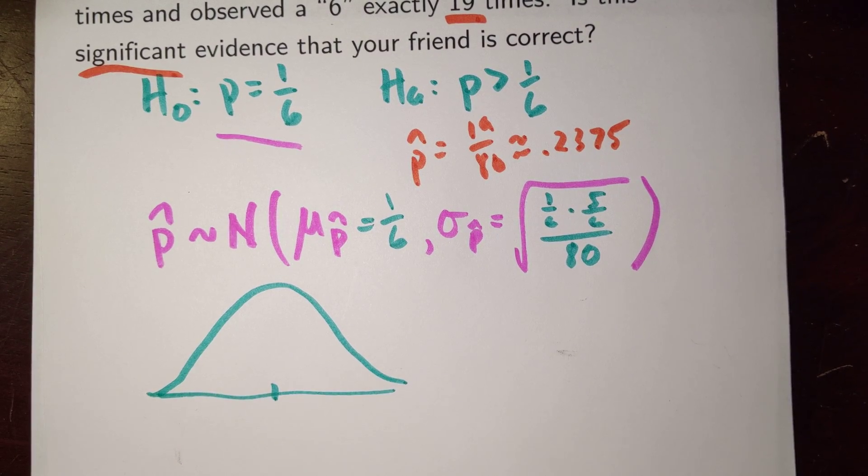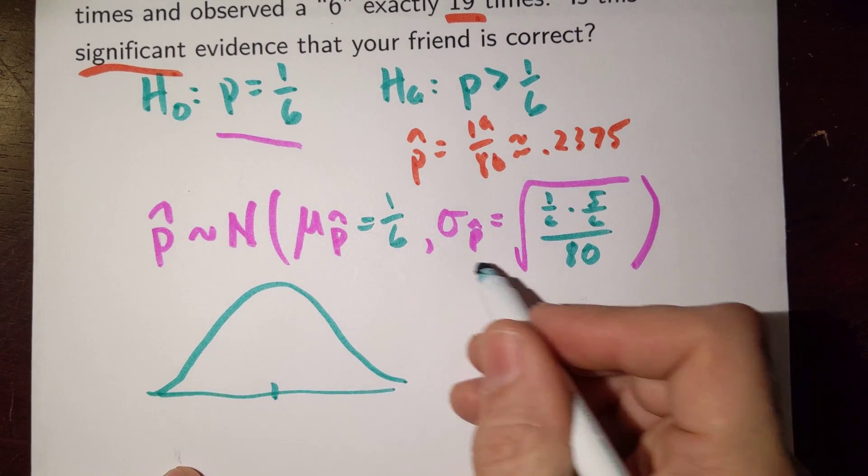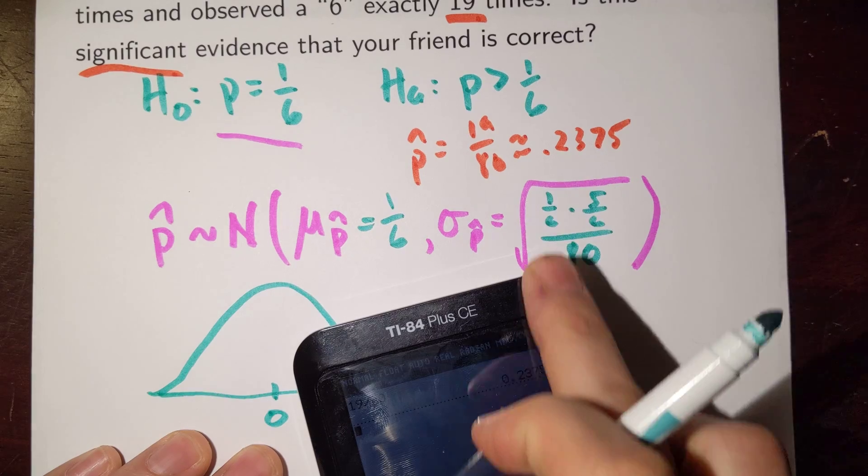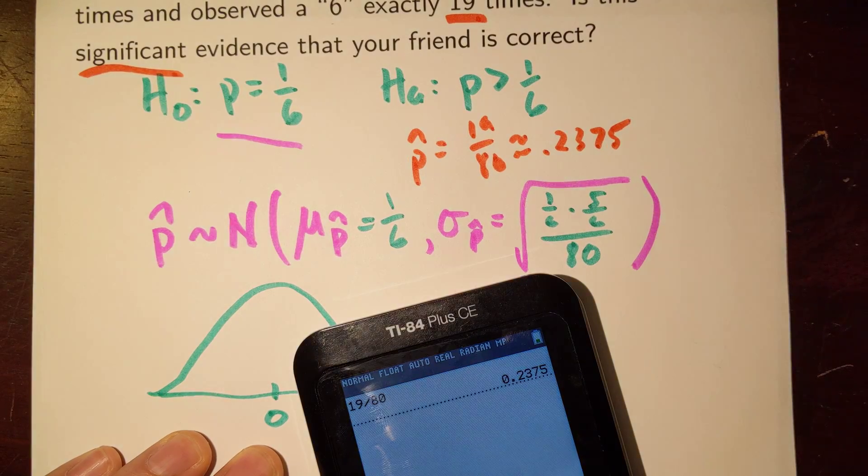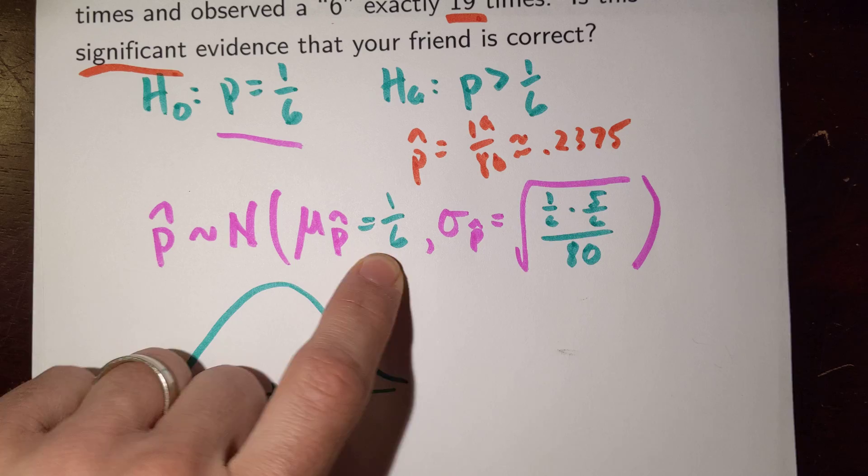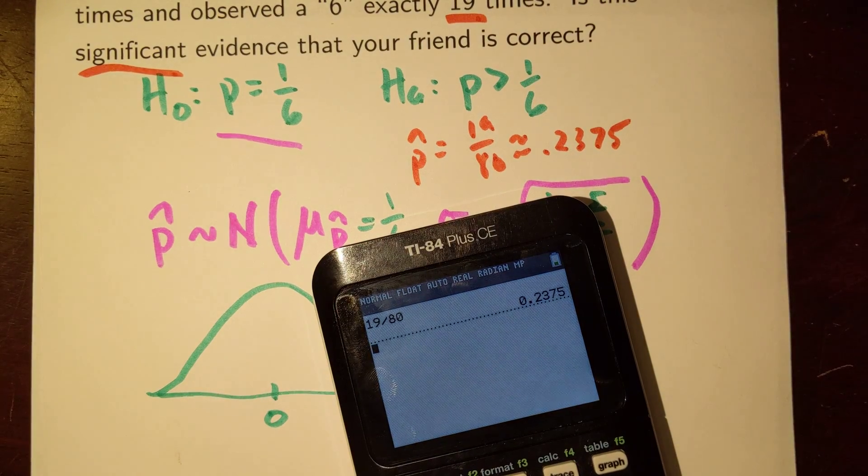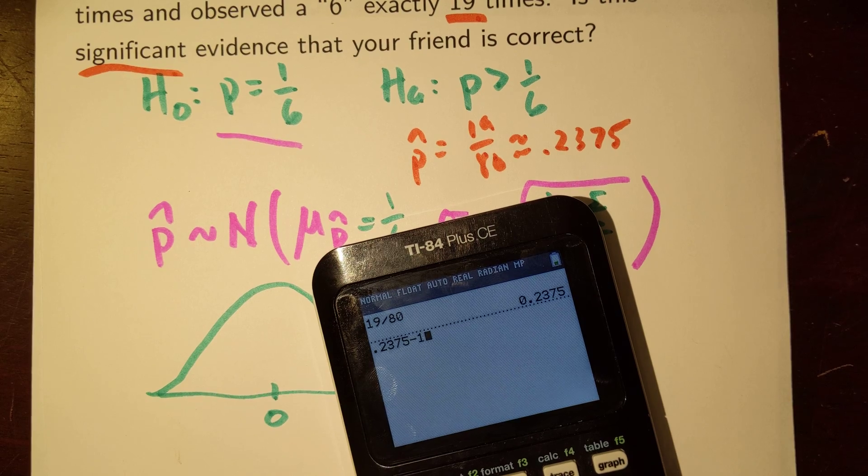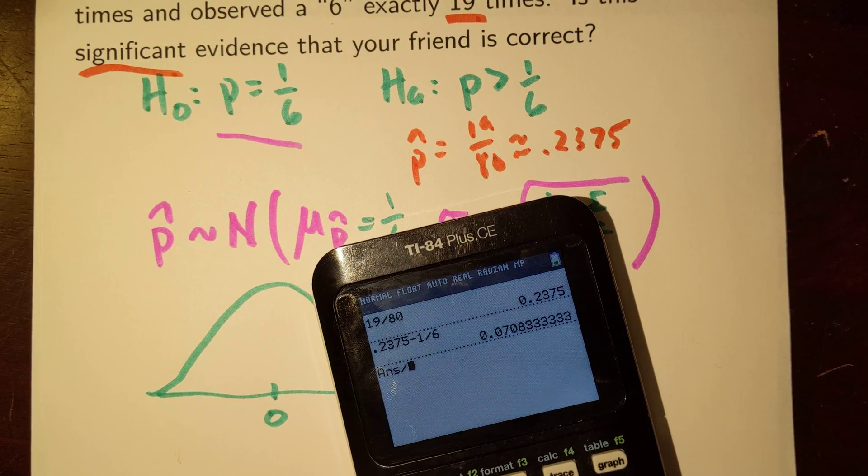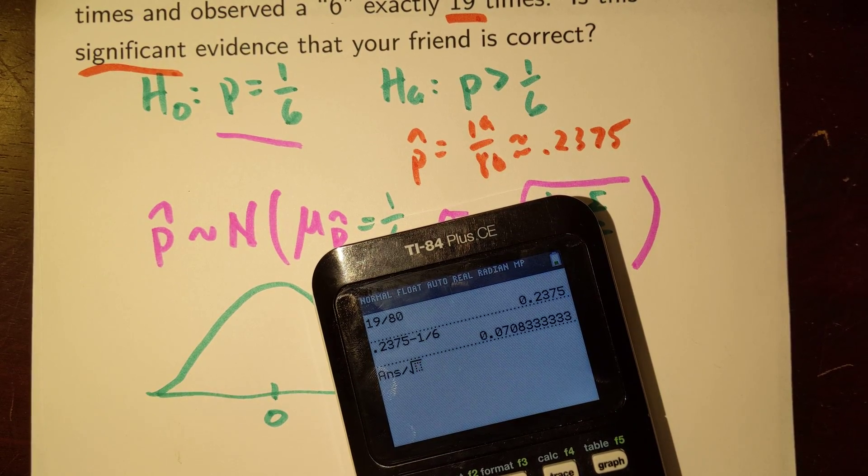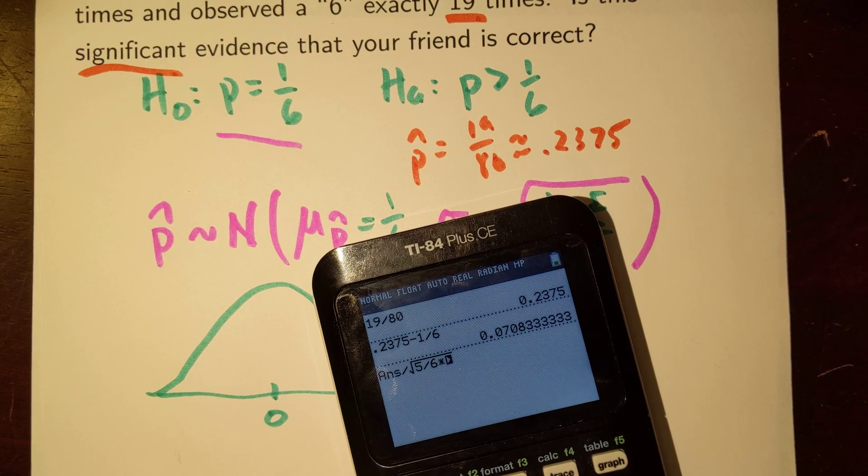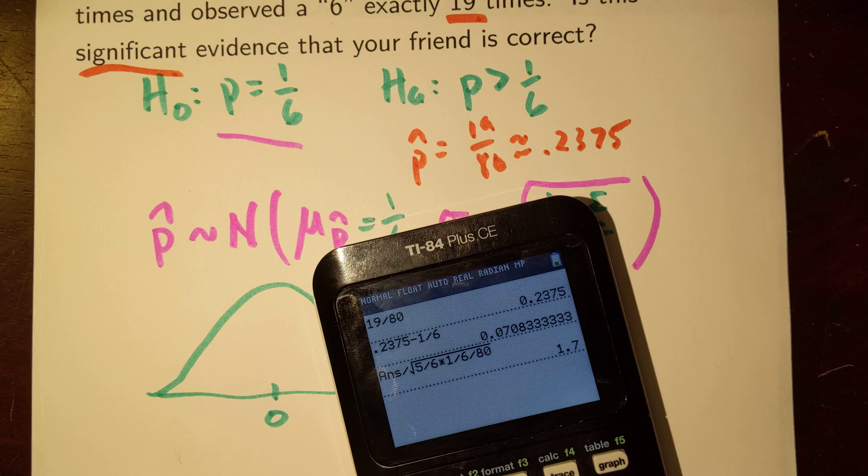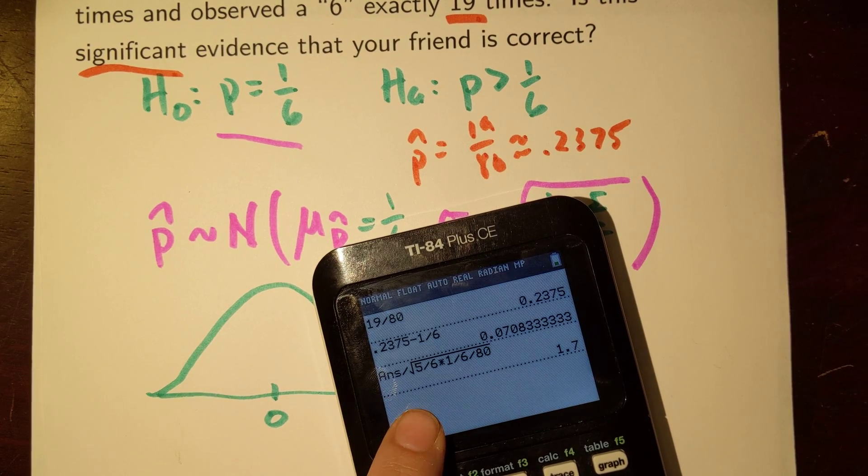But instead of actually labeling this normal distribution using these numbers, let me do it in a standardized way. So for instance, if I said how far off is 0.2375 from this mean here relative to the standard deviation, I could calculate a quick Z-score. I could do like 0.2375 minus 1/6. And then I could divide that by this big old square root 5 divided by 6 times 1 divided by 6 divided by 80.